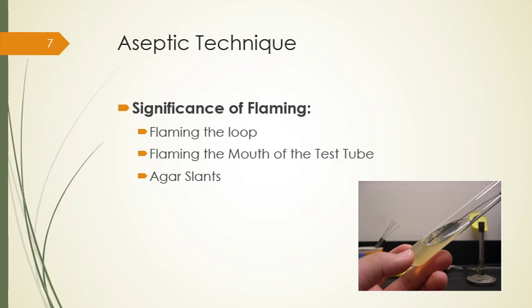Regarding flaming the mouth of the test tube: passing the mouth of a tube through the flame of a Bunsen burner creates a convection current which forces air out of the tube. This prevents airborne contaminants from entering the tube.